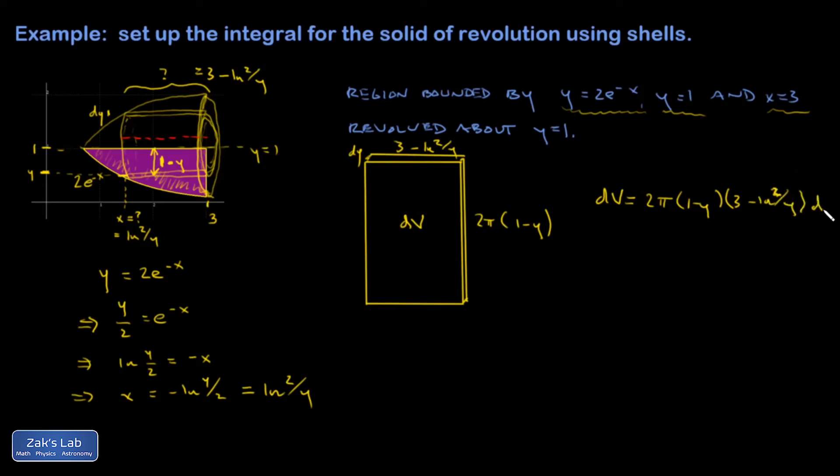And I'm done setting up my integral. Basically, V is the sum of all the dVs. I'll have one more complication coming up, and I have 2π integral 1 minus y times the quantity 3 minus natural log of 2 over y dy.